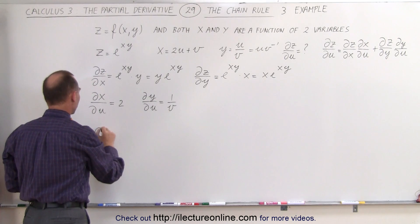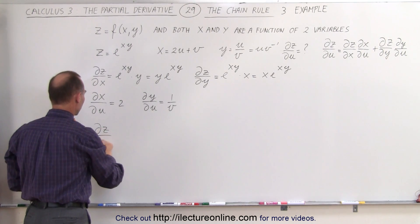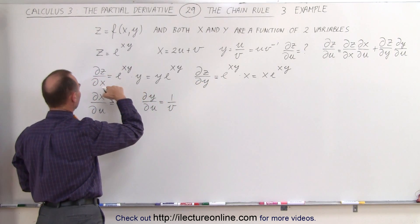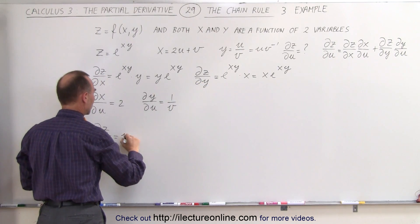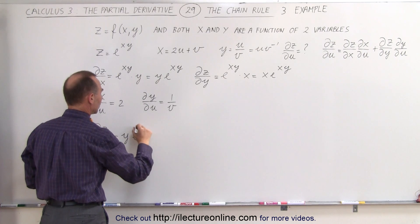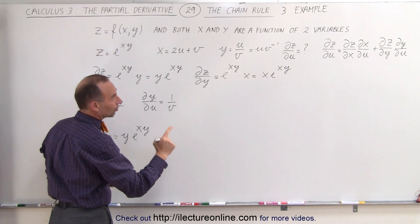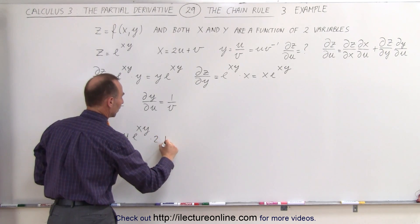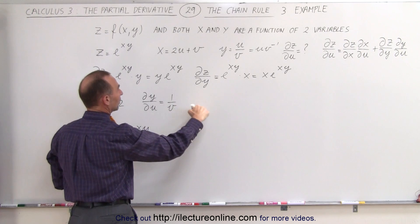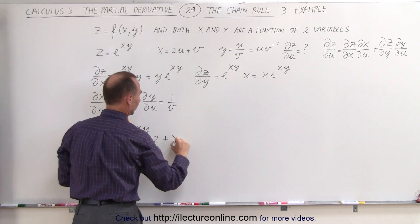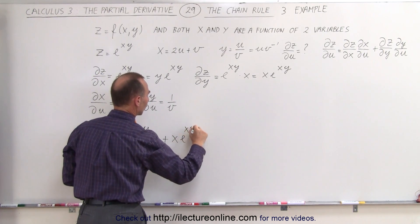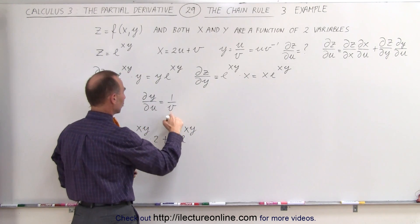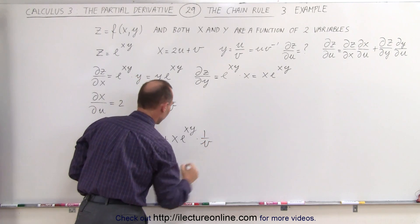Now we put it all together. The partial derivative of z with respect to u equals the first term: partial of z with respect to x — which is y·e^(xy) — times the partial of x with respect to u, which is 2; plus the partial of z with respect to y — which is x·e^(xy) — times the partial of y with respect to u, which is 1/v.